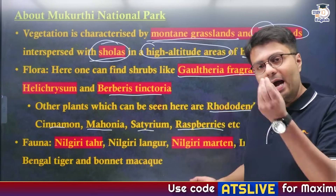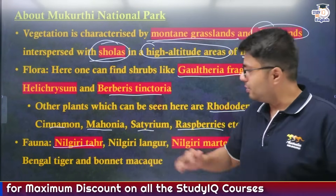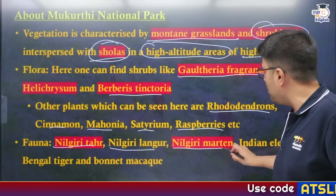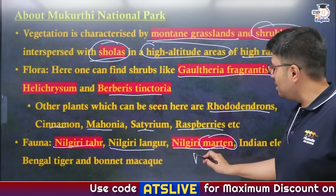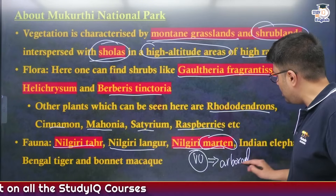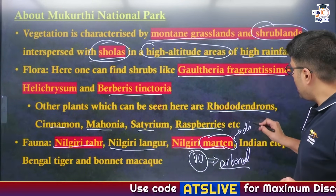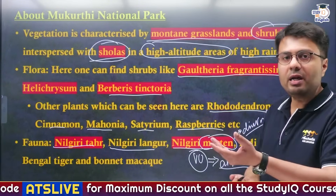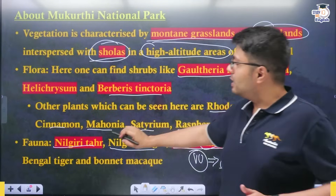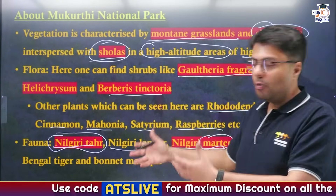Talking about the animals of the region: the park was created to protect the Nilgiri Tahr, which is the flagship species. Other important species include the Nilgiri Langur, and the Nilgiri Marten — a species of weasel categorized as vulnerable. The Nilgiri Marten is arboreal, meaning it mostly lives on trees and comes to land only for food, and it is diurnal, meaning it is active during the day. Other species include the Indian Elephant, Bengal Tiger, and Bonnet Macaque.